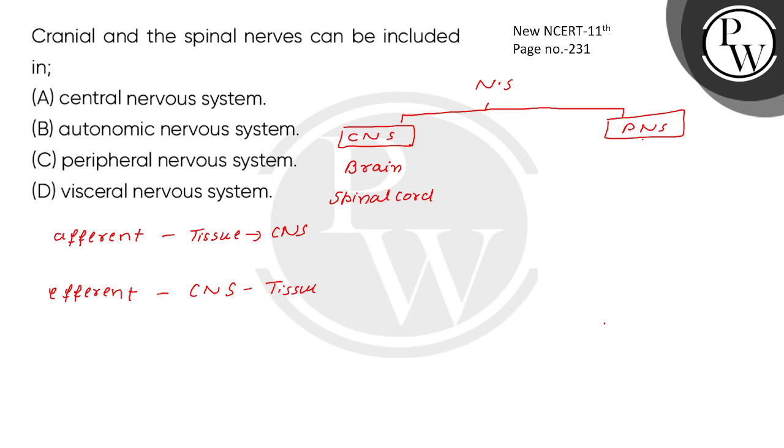Now, the Peripheral Nervous System is divided into two divisions: somatic neural system and autonomic neural system. In autonomic neural system you see two divisions: sympathetic and parasympathetic.